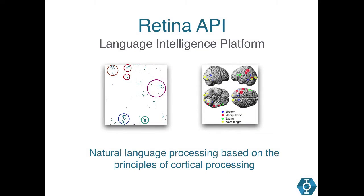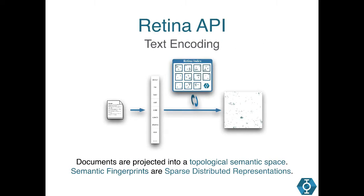Some quick background on what we do at Cortical and how this relates to the HTM. We provide an API that encodes text into a numeric representation, and this encoding process is similar to the way information is distributed throughout different areas of the brain. On the left you can see a graphical representation of how we store semantic information in a 128 by 128 matrix, with individual bits representing a specific meaning and related pieces of information stored close to each other, just like in the brain. We refer to these representations as semantic fingerprints — a sparse distributed representation, or word SDR.